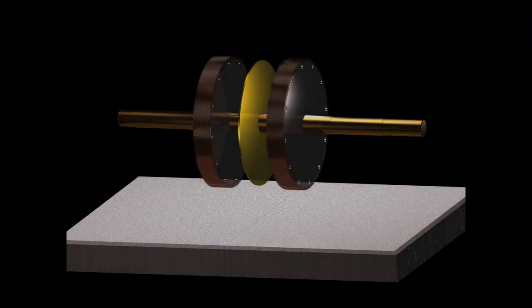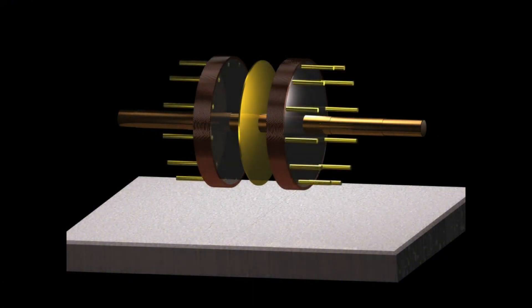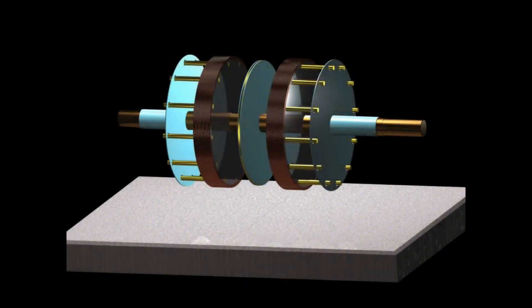At its core is a spinning metal rotor suspended in a magnetic field. When spun up to high speeds, the rotor generates an electric current.